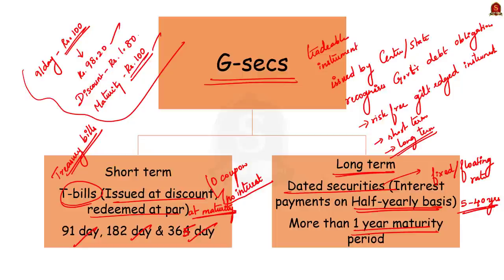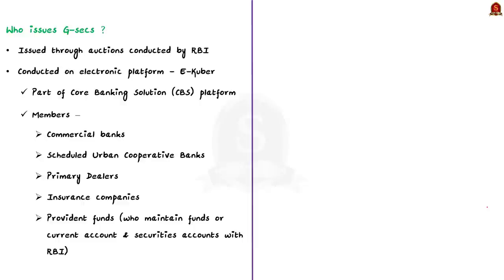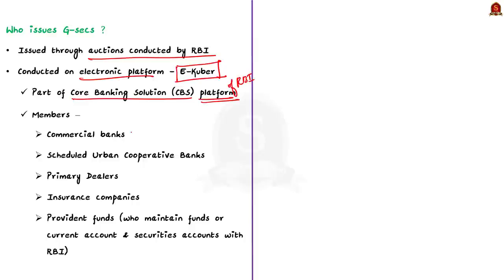Now let us see how government securities are issued. Government securities are issued through auctions conducted by the RBI. These auctions are conducted on the electronic platform called e-Kuber, which is the core banking solution platform of RBI. The members of this electronic platform include commercial banks, scheduled urban cooperative banks, primary dealers, insurance companies, and provident funds who maintain funds or current account and securities account with the RBI.